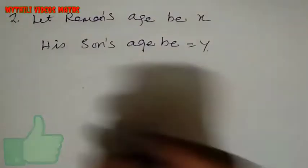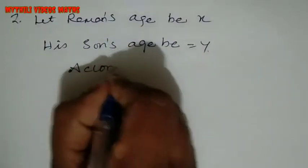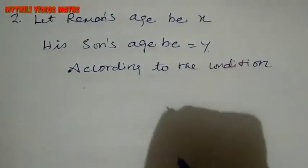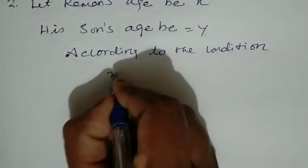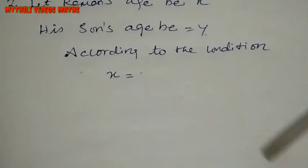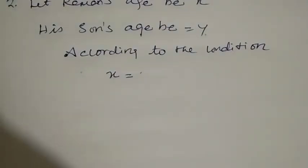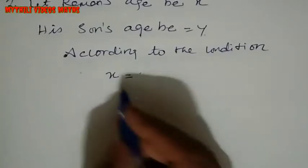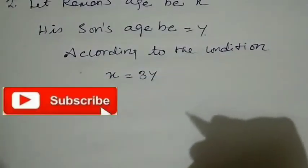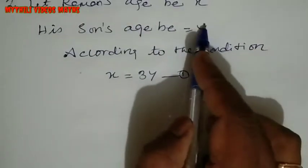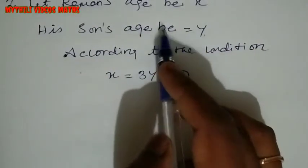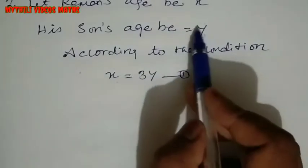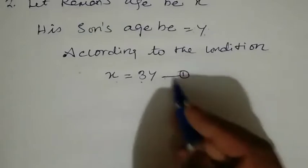According to the first condition, Raman's age is equal to 3 times the sum of the sons' ages. So X is equal to 3Y. This is Equation 1.